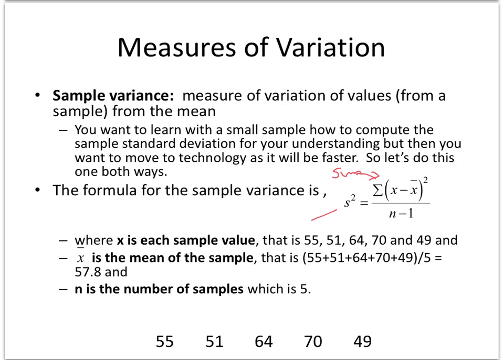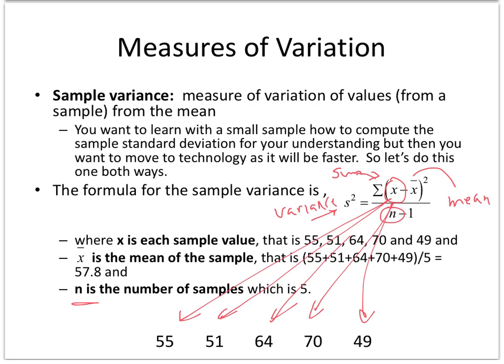This is my variance s squared, and what am I going to sum? I'm going to sum each data value minus the mean.